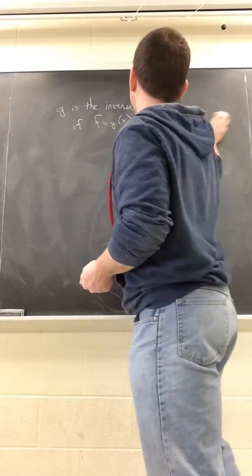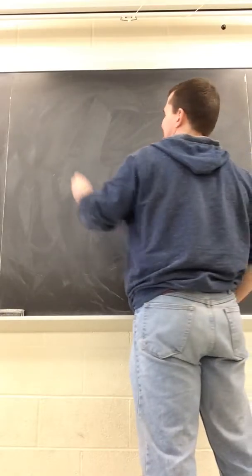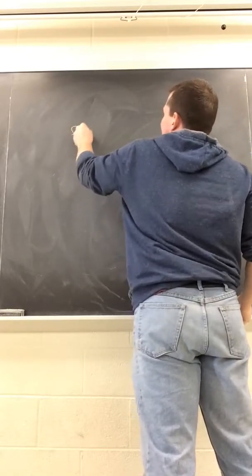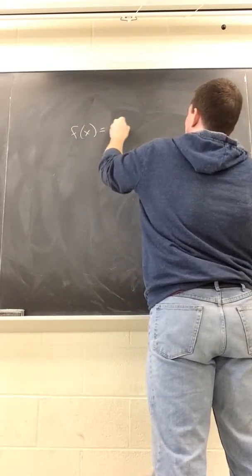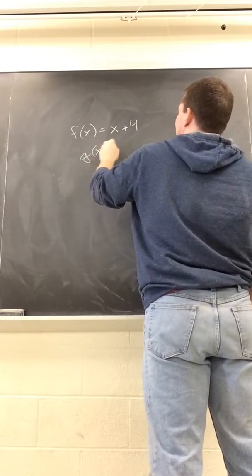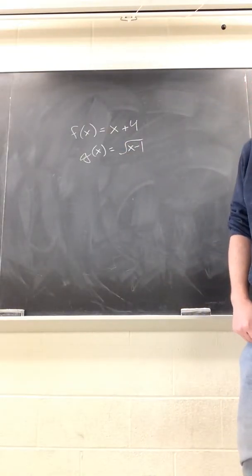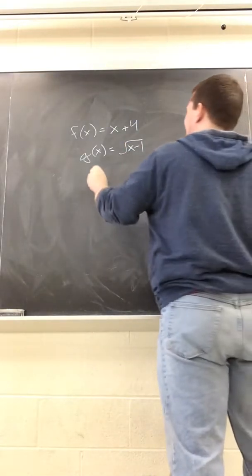Given any two functions, if you want to know if they're inverses, just do the composition. So if we have f(x) equals x plus 4 and g(x) equals the square root of x minus 1, if you want to know if they're inverses, just do the composition.